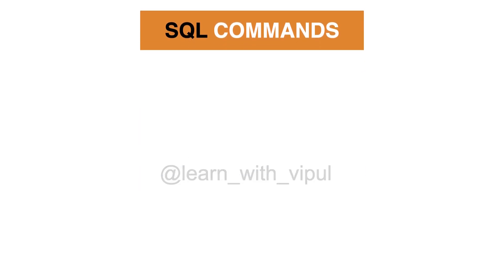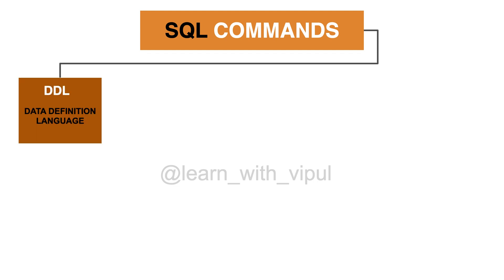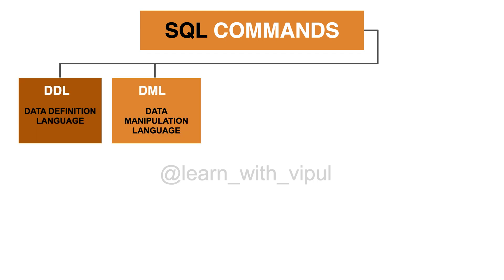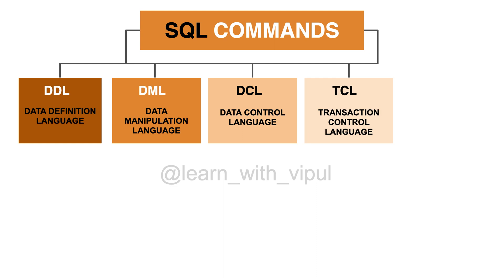The SQL commands are primarily divided into five main categories: DDL, DML, DCL, TCL, and DQL. Let's understand about them one by one.